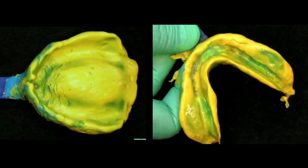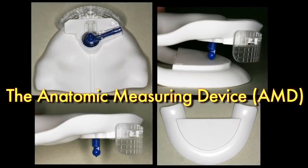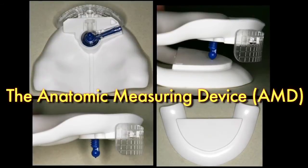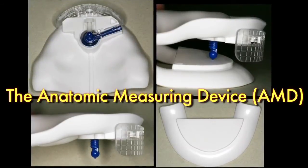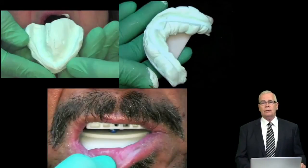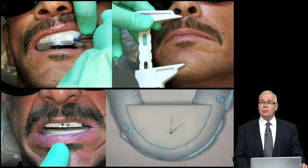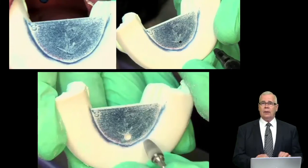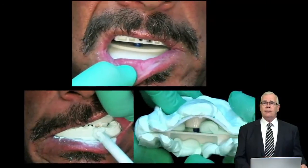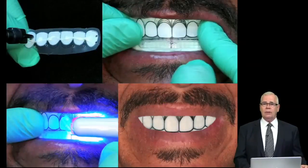This basically begins by making traditional impressions for a complete denture and then using the uniquely designed AMD, or anatomic measuring device, which allows us to record the occlusal vertical dimension, centric relation, and lip support all in one device. We use these to make partial arch impressions, and then the apex of the gothic arch tracing shows us where centric occlusion is located.